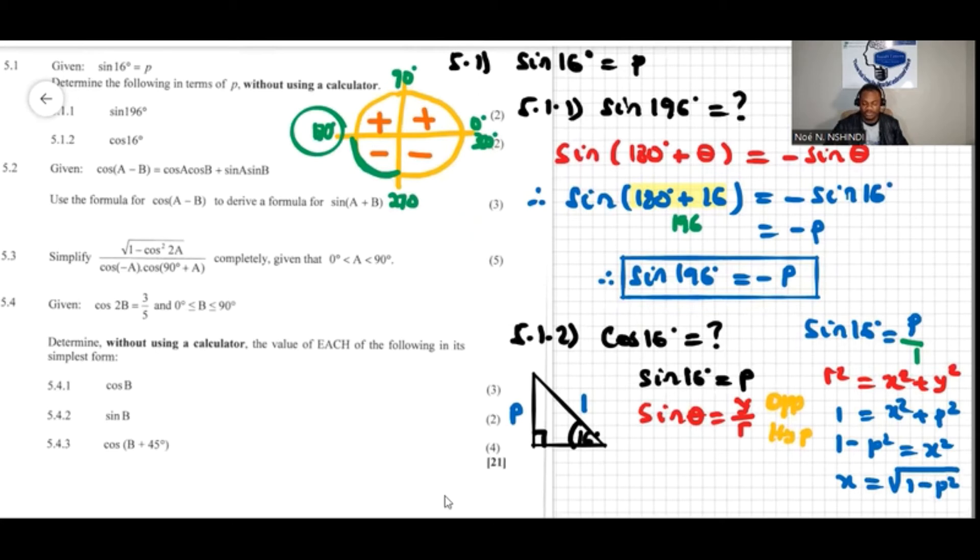If I square both sides, the square root will cancel the power of two, so it will be x equal to square root of one minus p squared. So over here we can just write square root of one minus p squared. That's the value of the adjacent side.